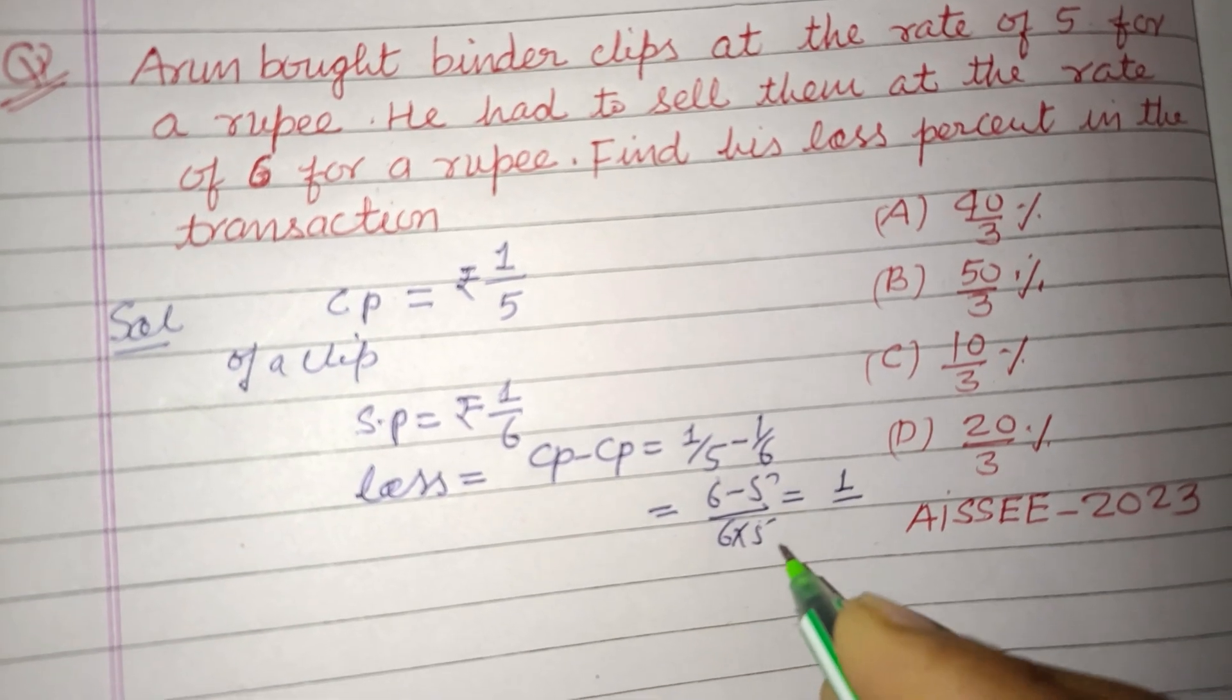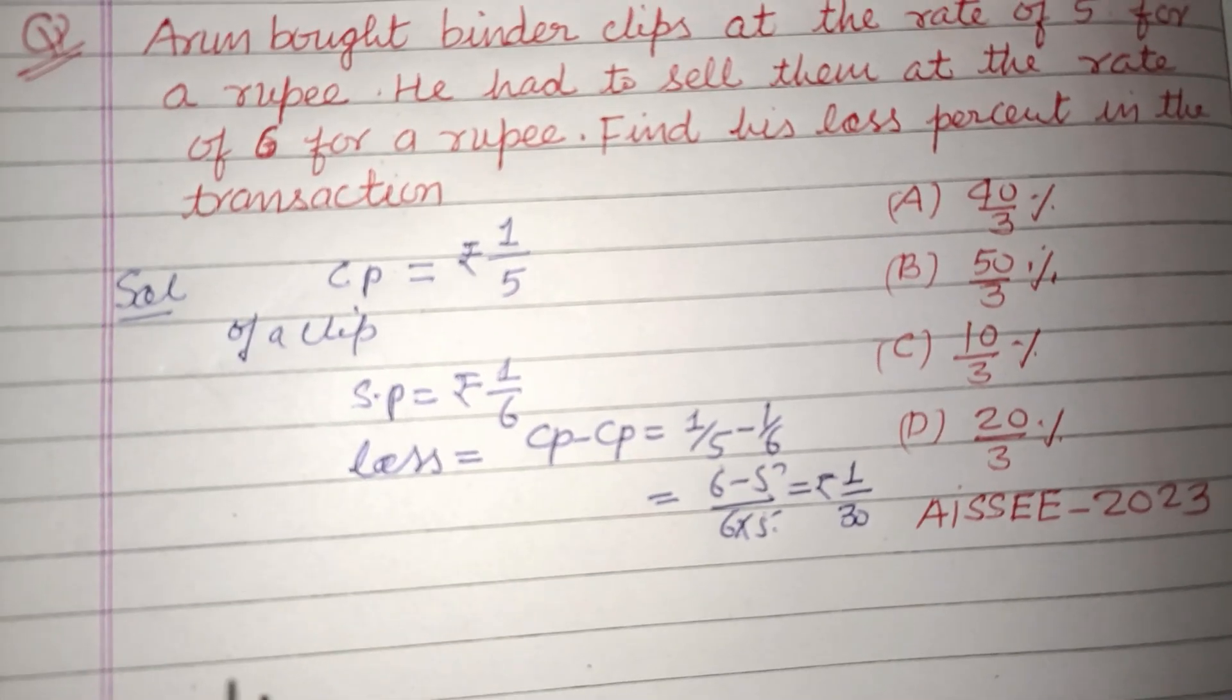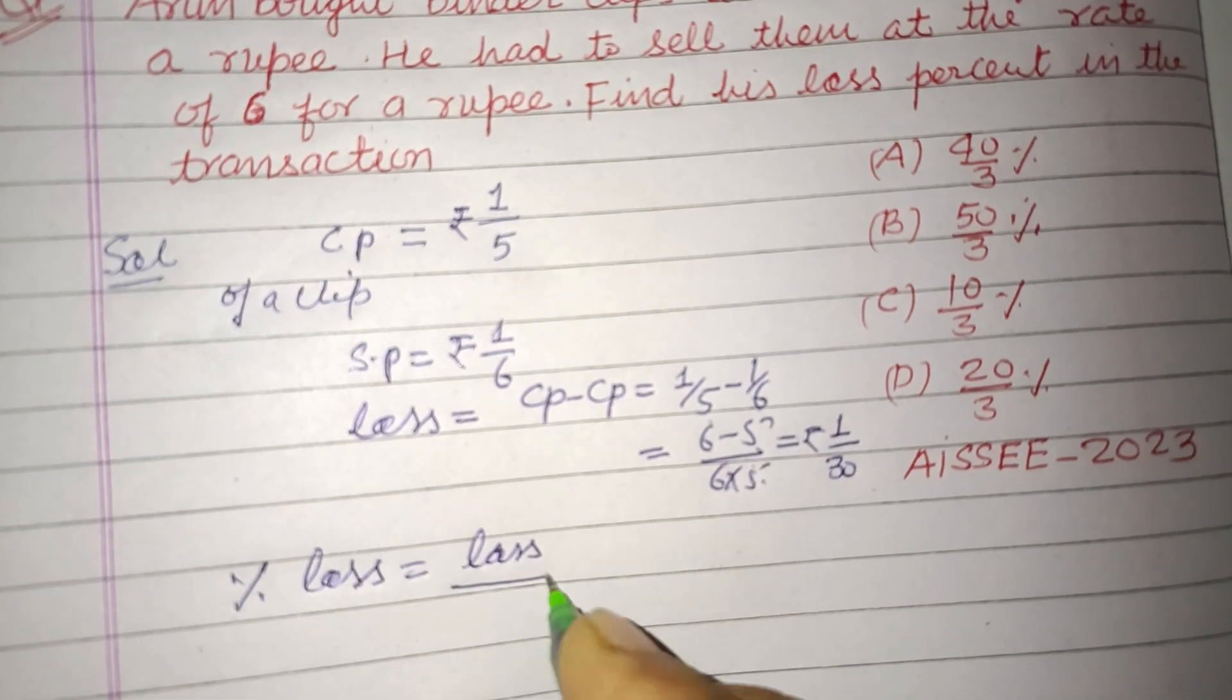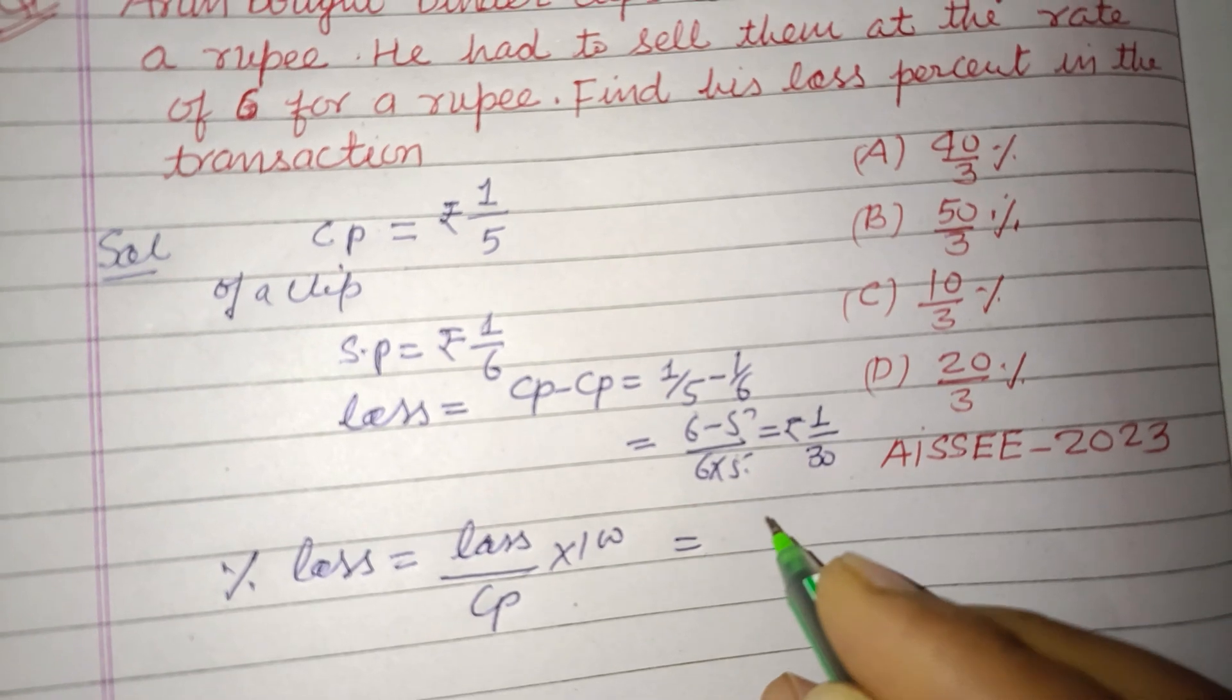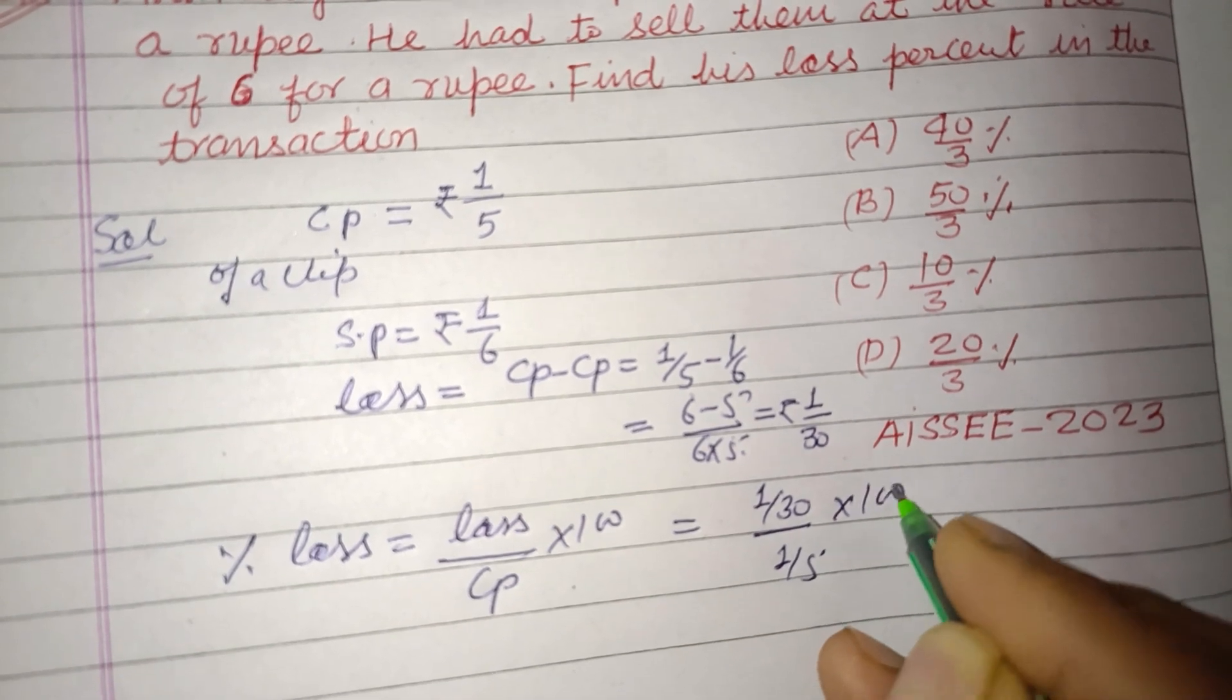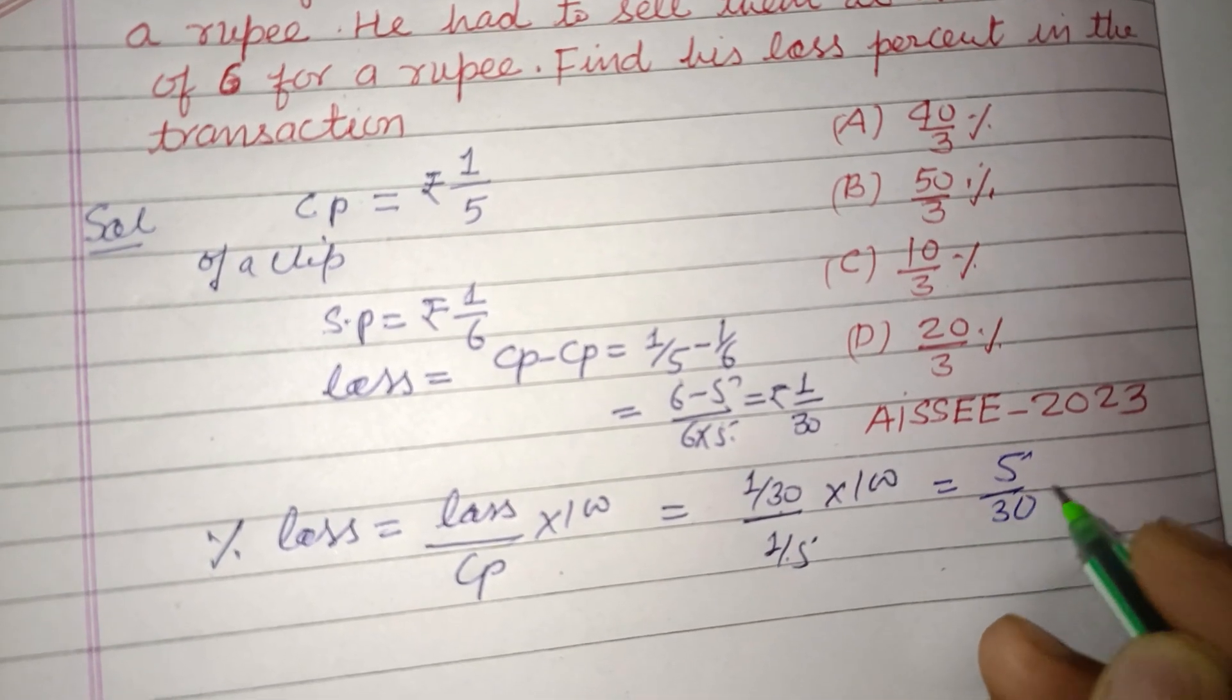So percentage loss equals (loss/CP) times 100. So loss is 1/30, CP is 1/5, times 100. On multiplication we get (1/30) divided by (1/5) times 100, which is 5/30 times 100.